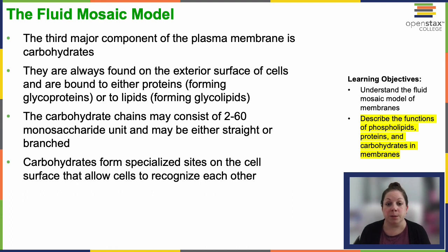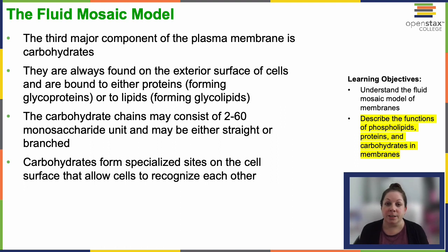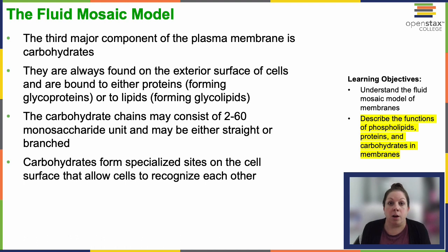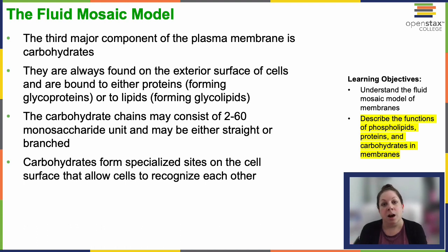The third major component of the plasma membrane are carbohydrates — sugars. They're always found on the exterior surface of the cells and are either bound to proteins, which we call glycoproteins, or bound to lipids, which we call glycolipids. Carbohydrate chains can be anywhere from 2 to 60 monosaccharide units long. They can be straight like a long chain, or many of them are branched — with branch points forming particular structures that allow for very specific, unique recognition. Carbohydrates form specialized sites on the cell surface that allow cells to recognize each other and to tell the cell what kind of cell it is.